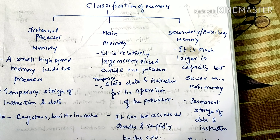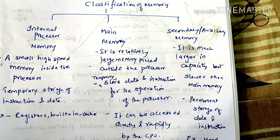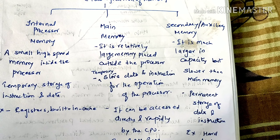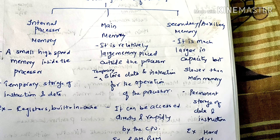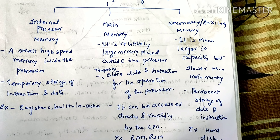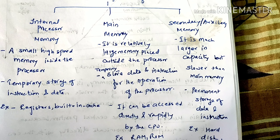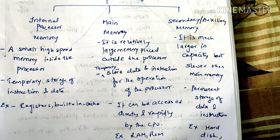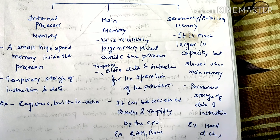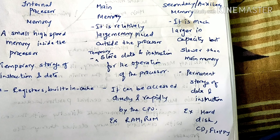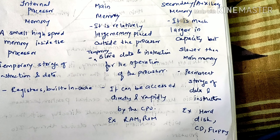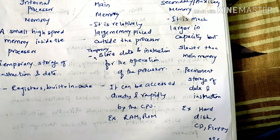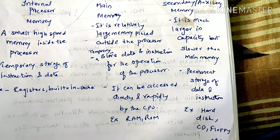The next memory type is secondary and auxiliary memory. It is much larger in capacity but slower than main memory — higher storage capacity but lower speed. It is used for permanent storage of data and instructions.